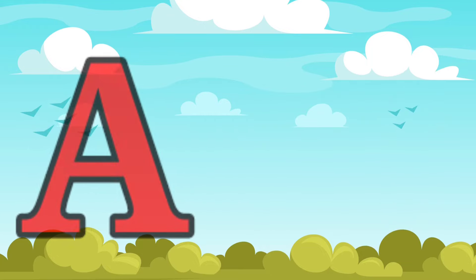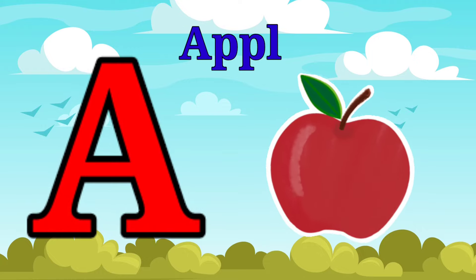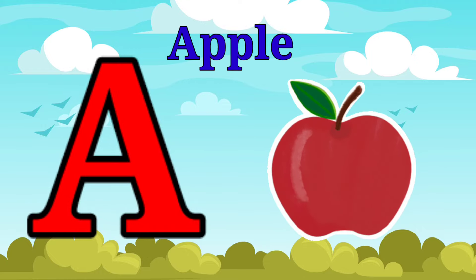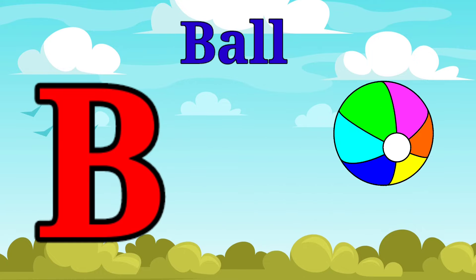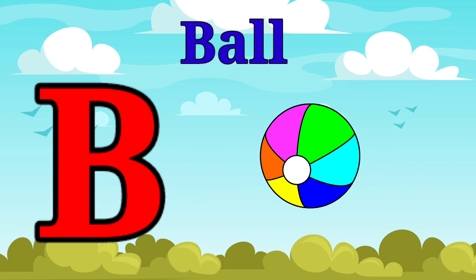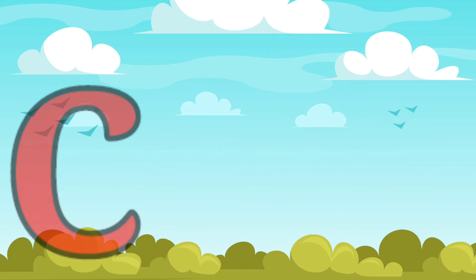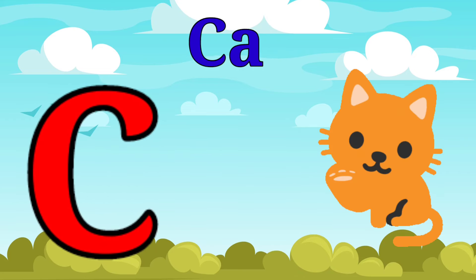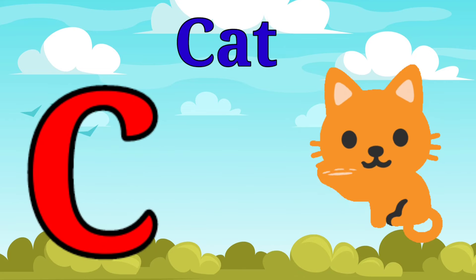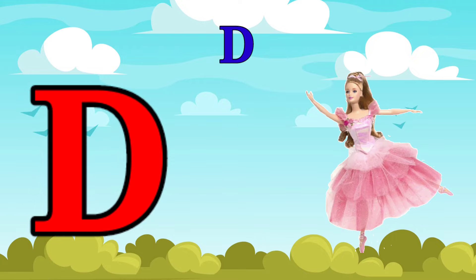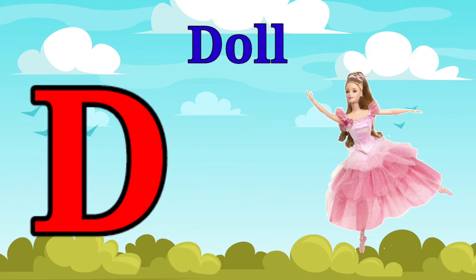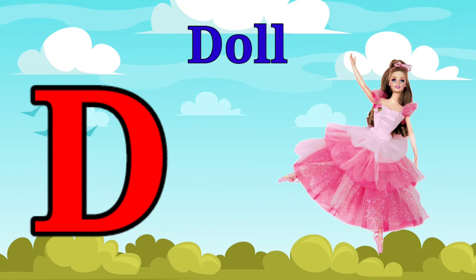A is for apple, a-a-apple. B is for ball, b-b-ball. C is for cat, c-c-cat. D is for doll, d-d-doll.